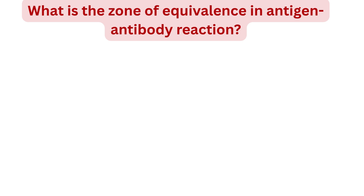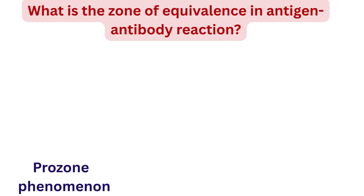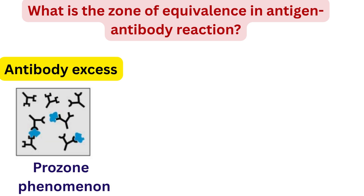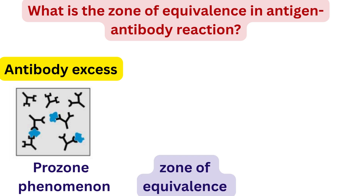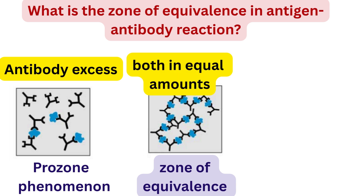Next question: what is a zone of equivalence? When an antigen reacts with an antibody, the result depends on how much of each is present. There are three zones. First, prozone: the antibody is in excess and antigen is less, so the test may show no reaction, leading to a false negative result. Second, zone of equivalence: antigen and antibody are in equal amounts — the ideal condition — forming a large complex visible as a precipitate, meaning the reaction is positive.